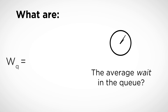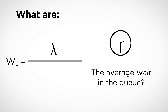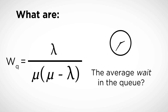The average amount of time that a customer has to wait in line in the MM1Q is given by lambda, the arrival rate, divided by mu, the service rate, times mu minus lambda. So again, lambda divided by mu times mu minus lambda.